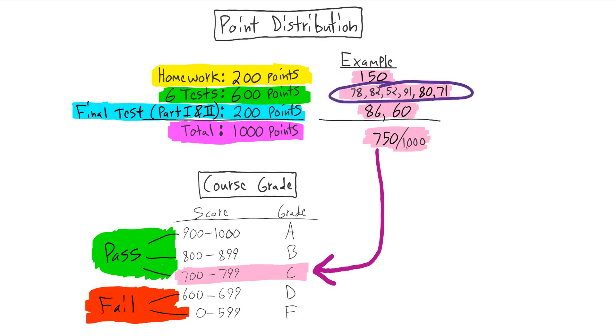Let's say that you did three quarters of the homework. So that's 150 points. And let's say that these are your grades, your scores for all the six tests. And these are your scores for the final. And you add those up and you get 750.